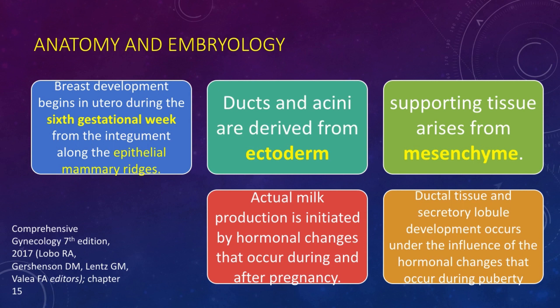Breast development begins in utero during the sixth gestational week from the integument along the epithelial mammary ridges. Ducts and sinuses are derived from the ectoderm, whereas supporting tissue arises from the mesenchyme. Ductal tissue and secretory lobule development occurs under the influence of hormonal changes during puberty. Actual milk production is initiated by hormonal changes that occur during and after pregnancy.